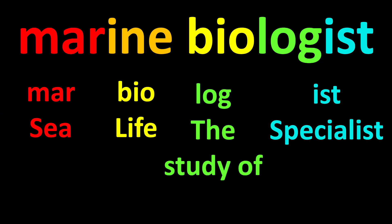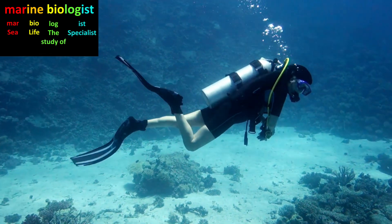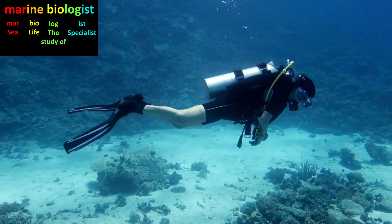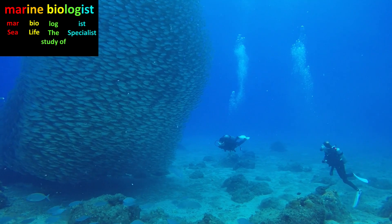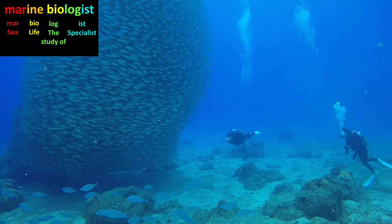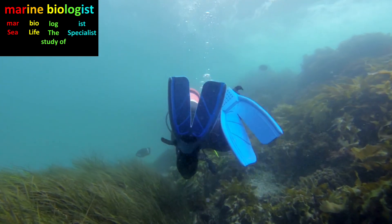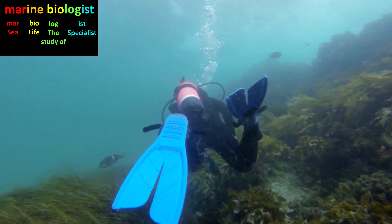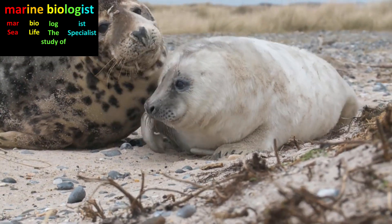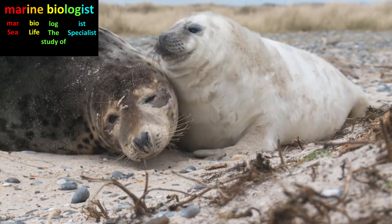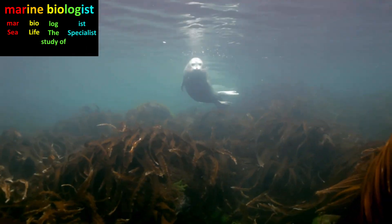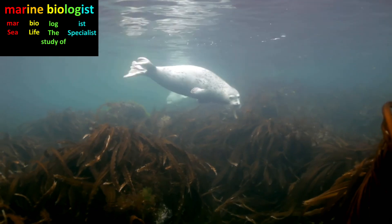The term 'marine biologist' starts with the word part 'mar,' which means the sea, and ends with the word part 'ist,' which means specialist. A marine biologist studies life forms in the sea. Marine biologists may do research on animals such as fish, dolphins, and corals, or study organisms similar to plants, such as kelp. Marine biology is just one of many specialties within biology, and it happens to be fairly popular in K-12 education.